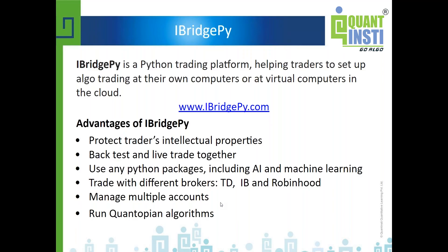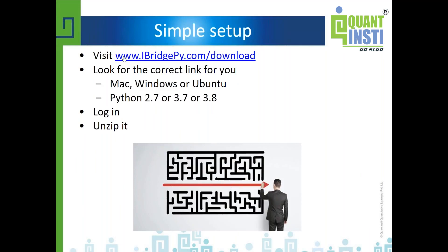Setting up iBridgePy is very simple. Visit iBridgePy.com/download, find the correct link for your system — iBridgePy supports Mac, Windows, and Ubuntu Linux, as well as Python 2.7, 3.7, and 3.8. Download the correct version for your system, create an account if needed, log in, download, and unzip. That's it — no additional setup required.